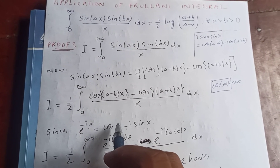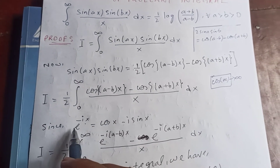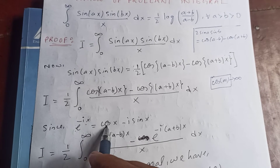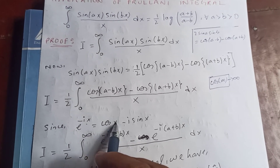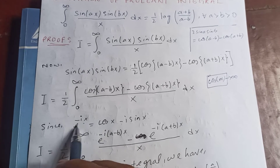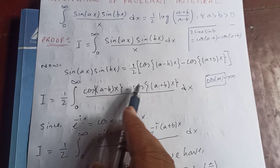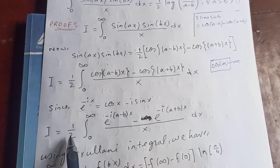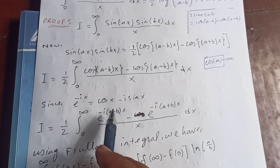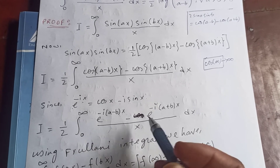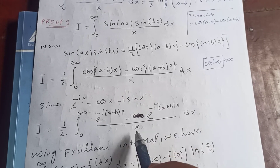In order to proceed, we use Euler's identity: e^(−ix) = cos(x) − i·sin(x). If we apply this and extract the real part after solving, then I equals half of the integral from zero to infinity of [e^(−i(a−b)x) minus e^(−i(a+b)x)] over x dx.